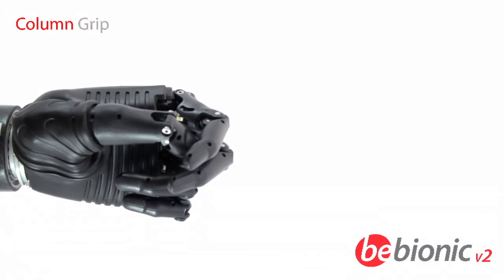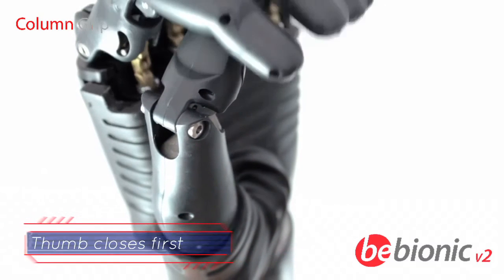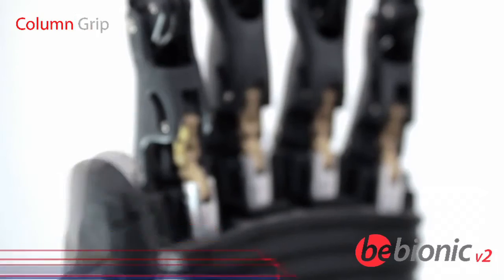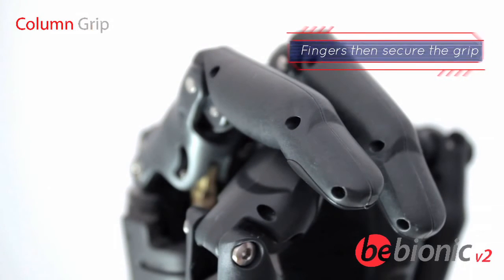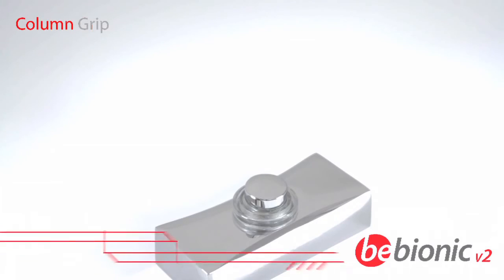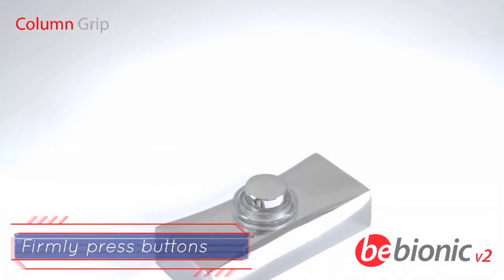In column grip, the fingers flex and are held in position by the thumb, providing a fixed column point to firmly press a button or operate a lever.